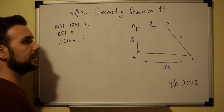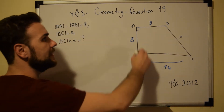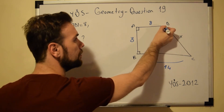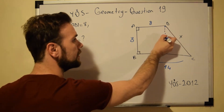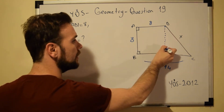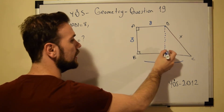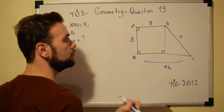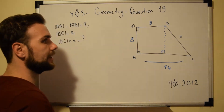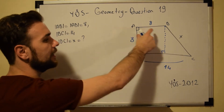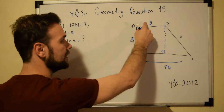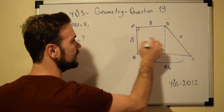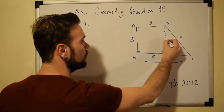If this side is 8 and this side is 8, and I draw a perpendicular line here to BC, I create a square. Because if this is 8, this will also be equal to 8 and this will be equal to 8.